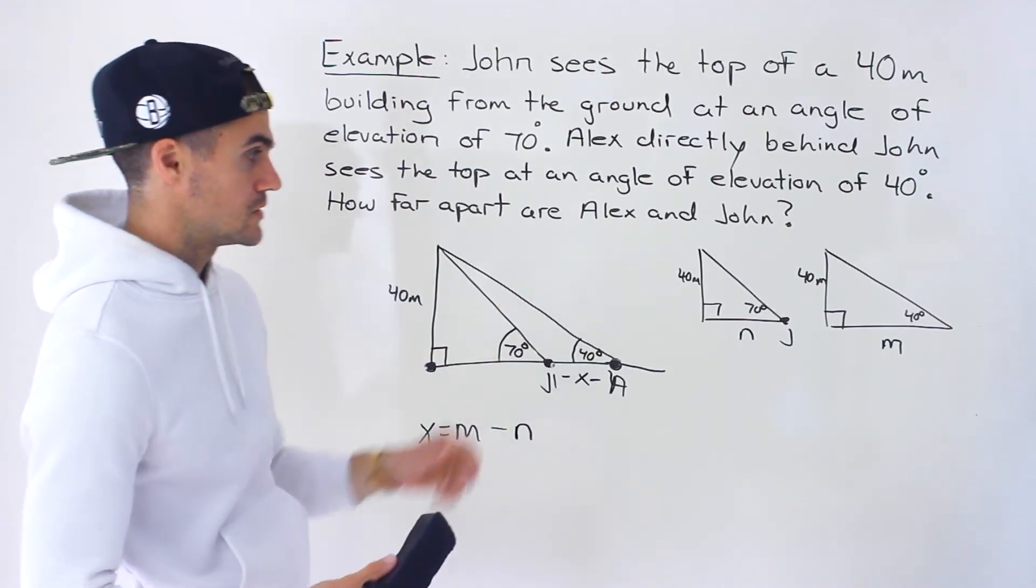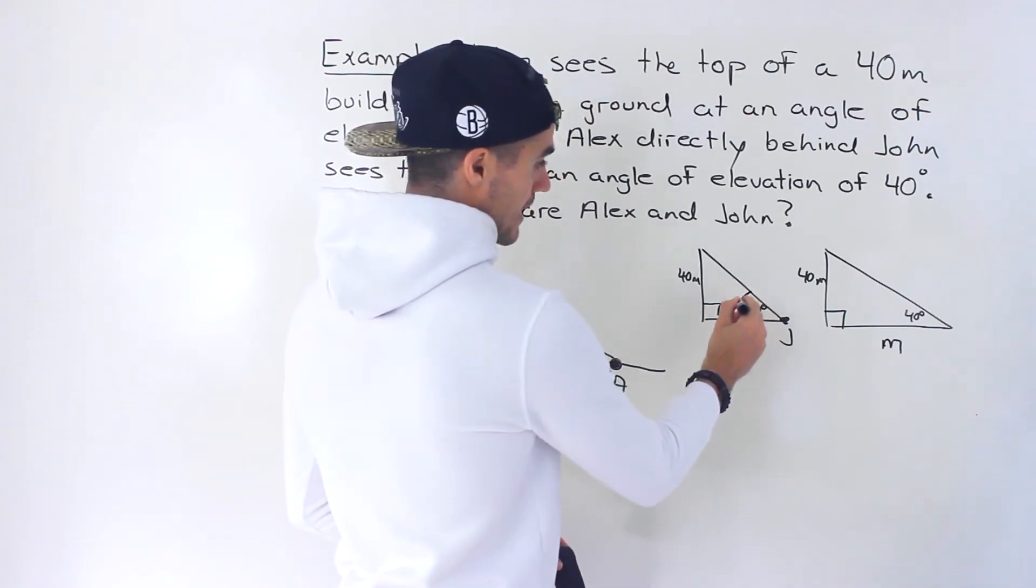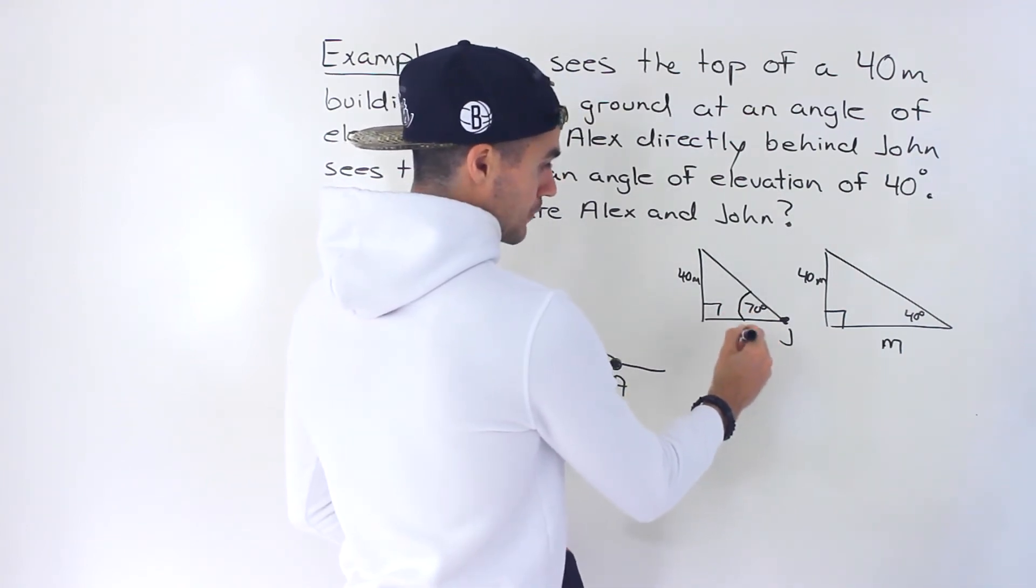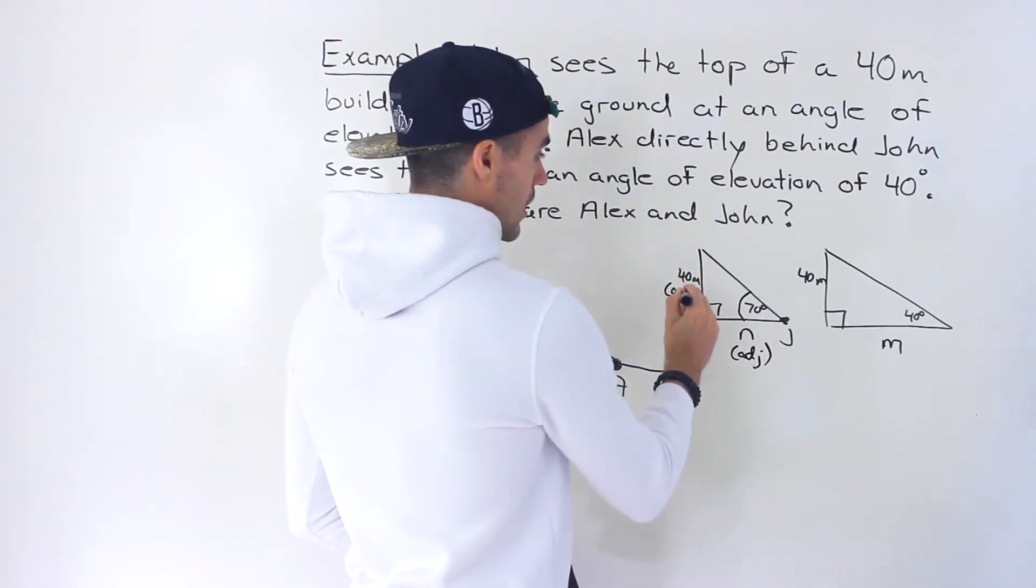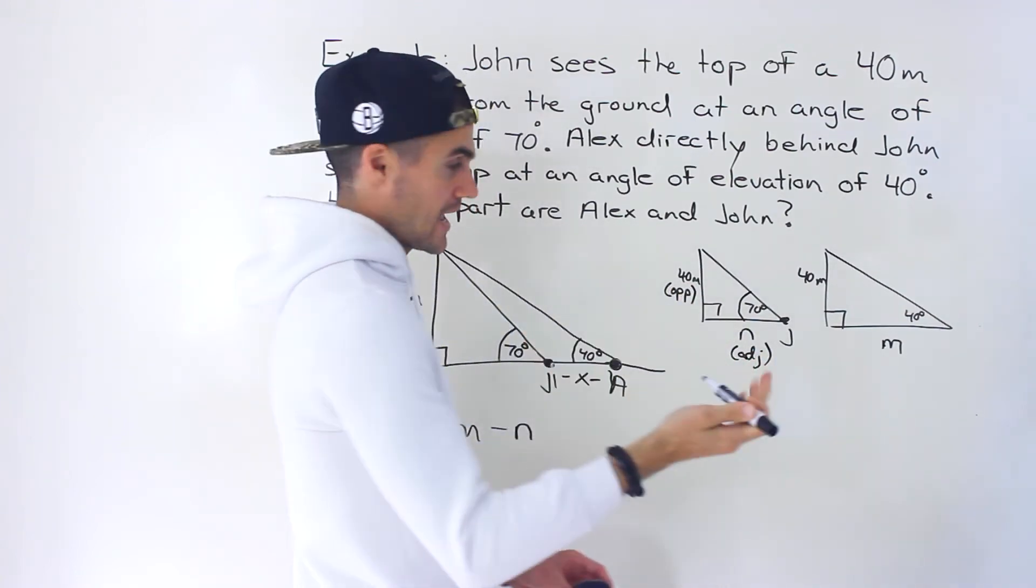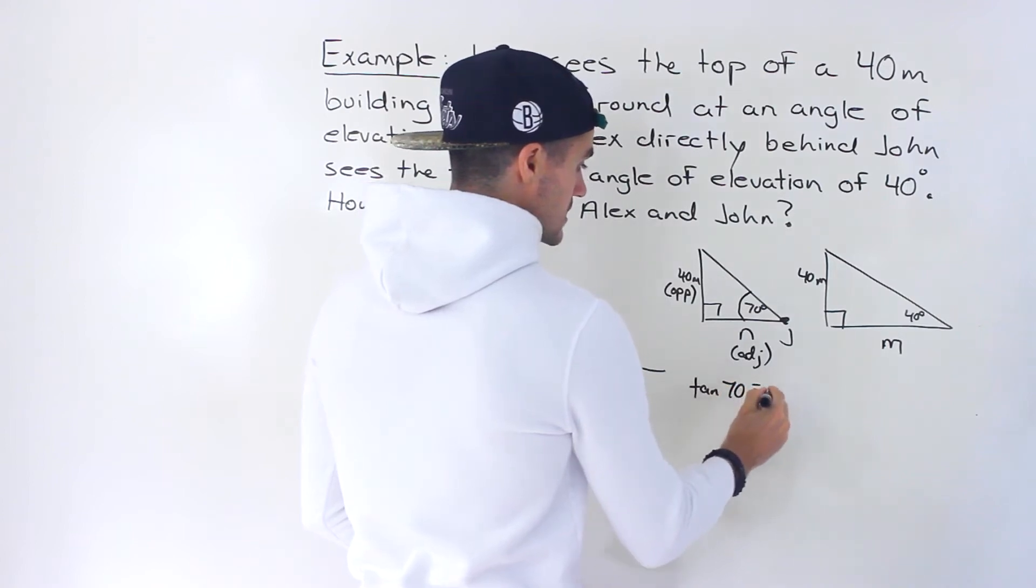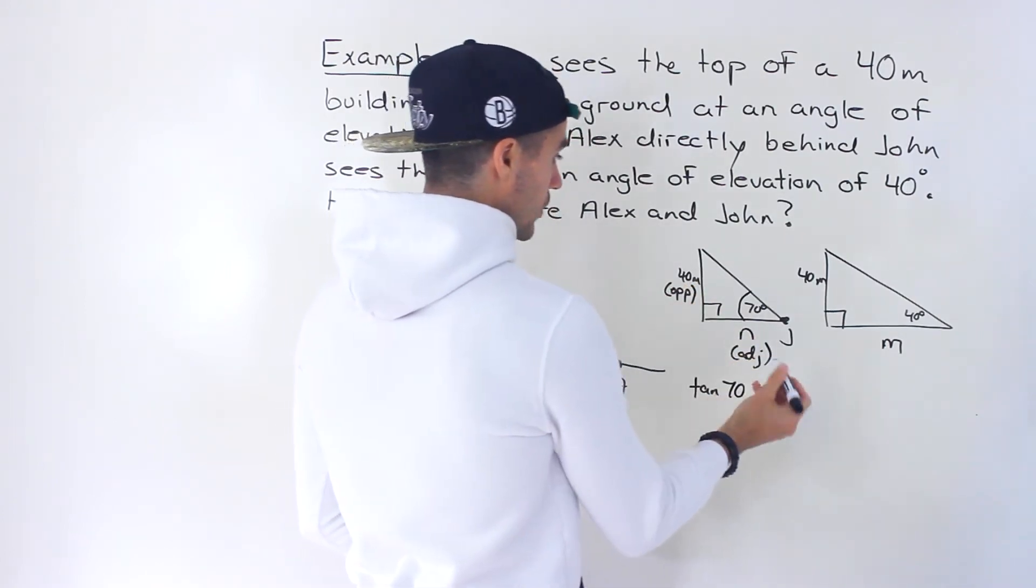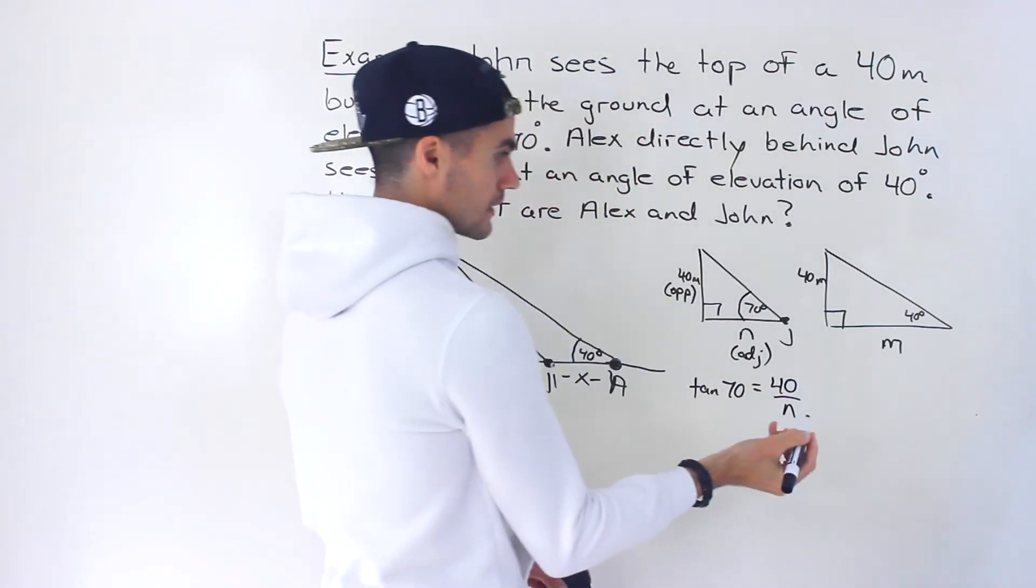So question is, how can we do that here? So starting with this triangle, notice that we have this angle. We have this side, which we're solving for, which is the adjacent side. And then we have this side, which is the opposite side. So which ratio deals with the adjacent and the opposite? The tan ratio. So we can go tan of 70 is equal to opposite over adjacent. So it would be 40 over N, like that.